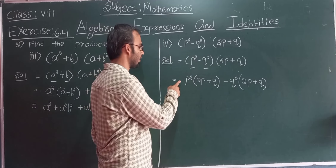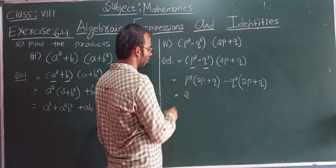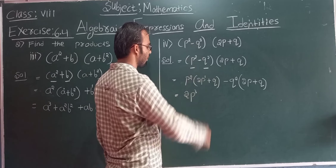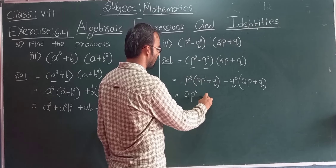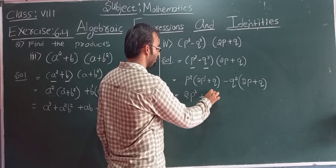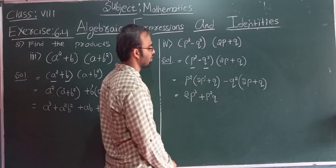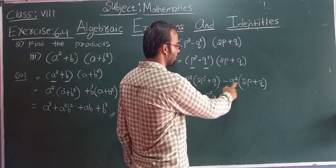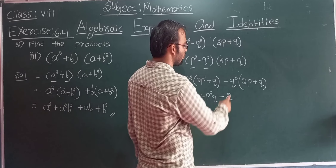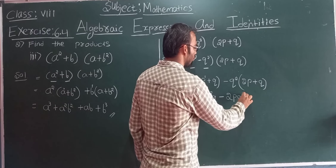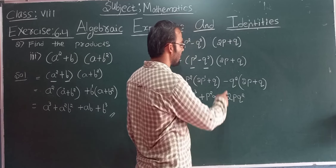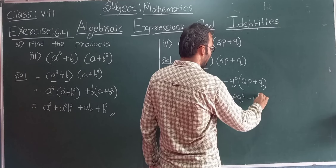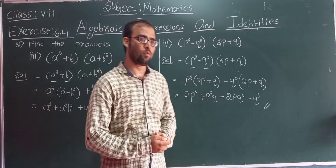Now multiply: nothing means 1 is there, so 1 times 2 gives 2, and p squared into p gives p to the power 3. Next, p squared into q gives pq squared. Now minus into plus is minus: 1 times 2 gives 2, and q squared into p gives pq squared. Then q squared into q gives q to the power 3. So the solution for the fourth problem is 2p cubed plus p squared q minus 2pq squared minus q cubed.